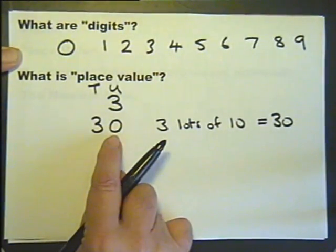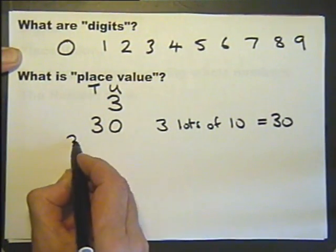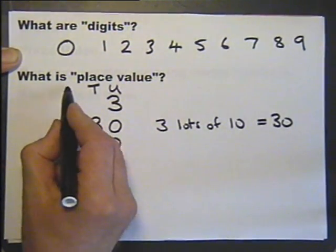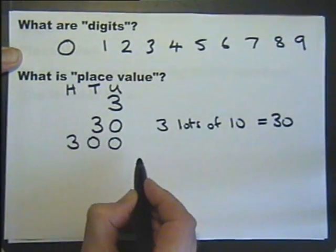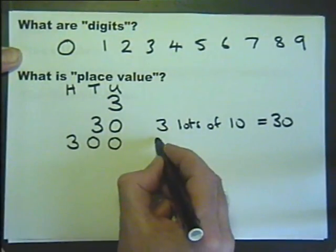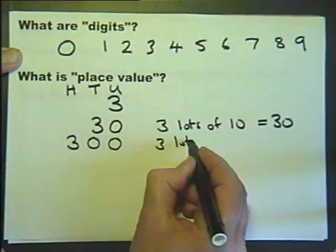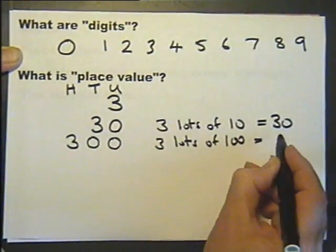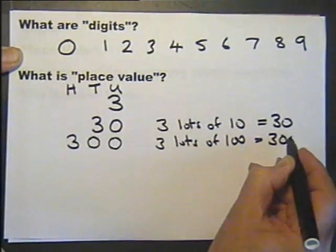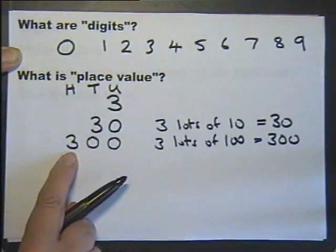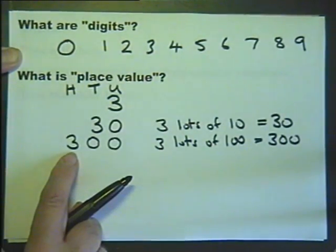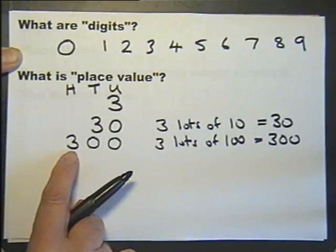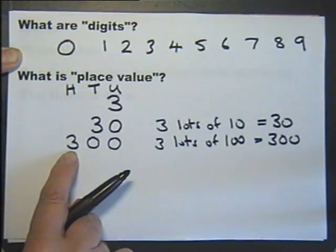Now let's look at this. The 3 now is in the hundreds column. So in other words, we have got 3 lots of 100. The 3 lots of 100 is 300. So the digit 3 in this position gives us the number 300. So the place value of the 3 is 300.